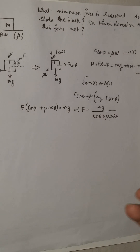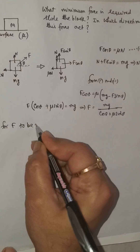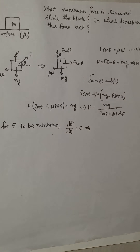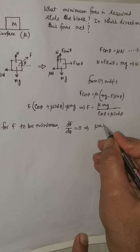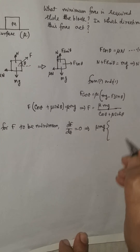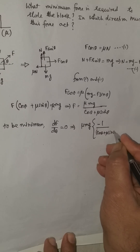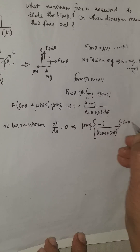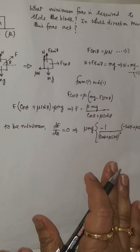Now we have the expression for F and want to find its minimum value. For F to be minimum, dF/dθ should equal zero. Differentiating: dF/dθ equals mu Mg times negative 1 divided by (cos theta plus mu sin theta) squared, multiplied by the bracket (minus sin theta plus mu cos theta). So this quantity is set to zero.